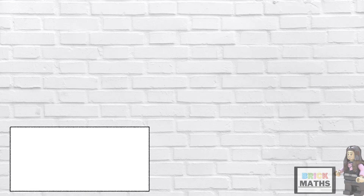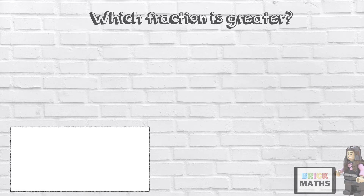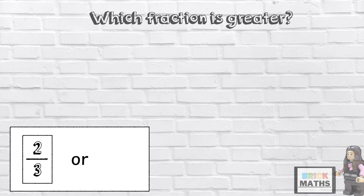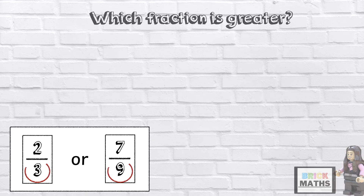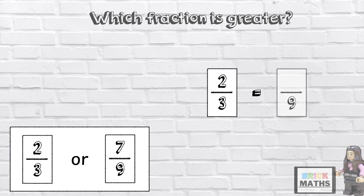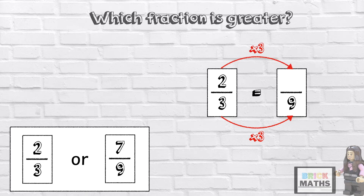Let's have another go. Which fraction is greater? 2 thirds or 7 ninths? Remember, we need to make the denominators the same to be able to compare them. So 3 is multiplied by 3 to get 9, so now we need to multiply the numerator by 3. 2 times 3 equals 6.